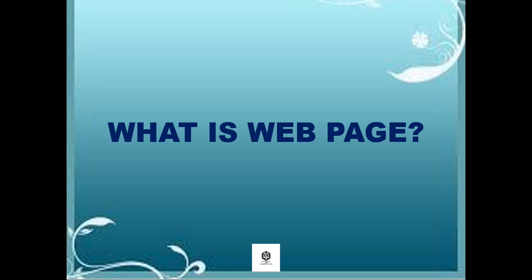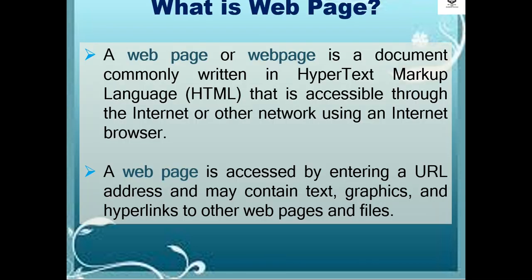What is a web page? A web page is a document commonly written in Hypertext Markup Language, or HTML, that is accessible through the internet or other network using an internet browser. A web page is accessed by entering a URL address and may contain text, graphics, and hyperlinks to other web pages and files.